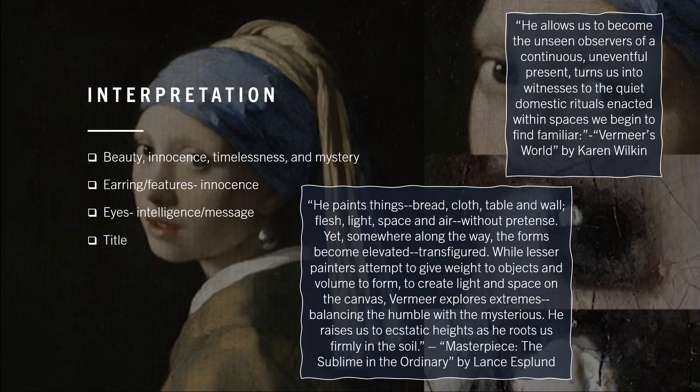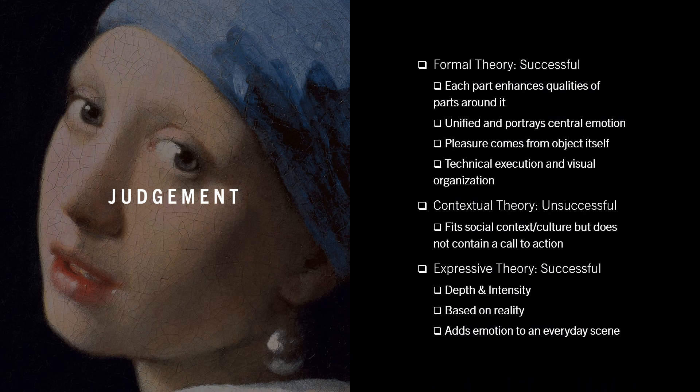In Masterpiece: The Sublime and the Ordinary, Lantus Lund states: "He paints things — bread, cloth, table and wall, flesh, light, space, and air — without pretense. Yet, somewhere along the way, the forms become elevated, transfigured, while lesser painters attempt to give weight to objects and volume to form to create light and space on the canvas. Vermeer explores extremes, balancing the humble with the mysterious. He raises us to ecstatic heights as he roots us firmly in the soil." This shows how the subject of the painting was meant to be general or ordinary, and it is the qualities that elevate the painting. It is impossible to describe these qualities in a title, so no more is needed than simply, Girl with the Pearl Earring.